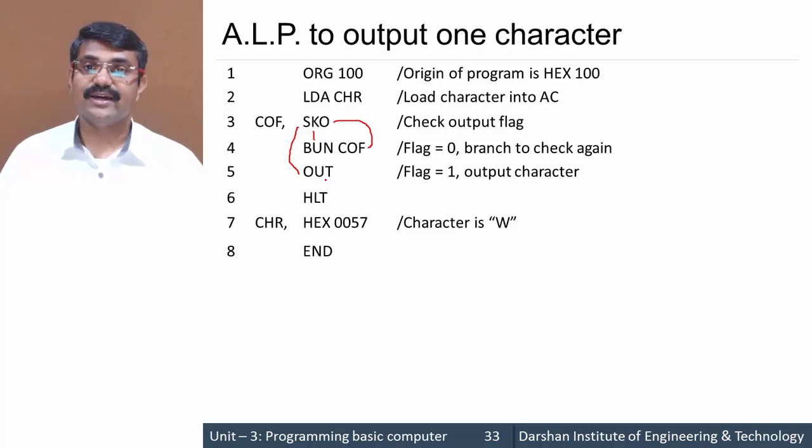Now the OUT instruction - you are aware that OUT instruction will transfer the data from AC to output register, and output register to the output device. And it will halt our program. So this is how outputting one character takes place.